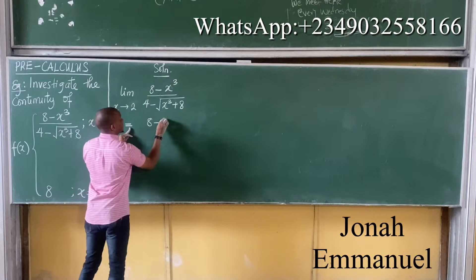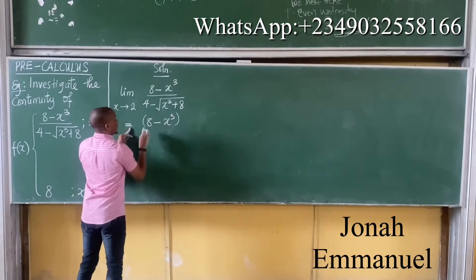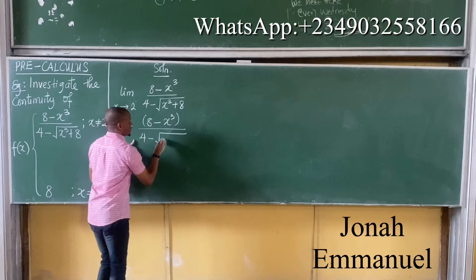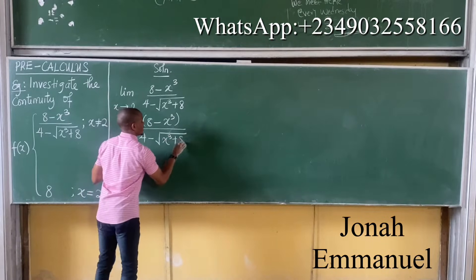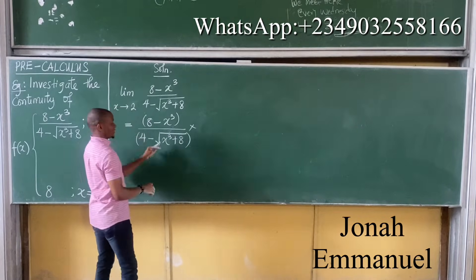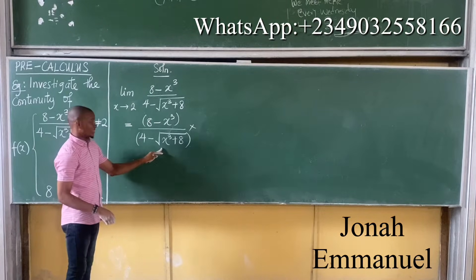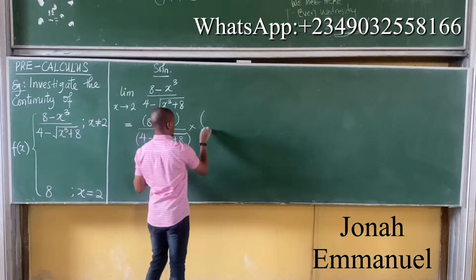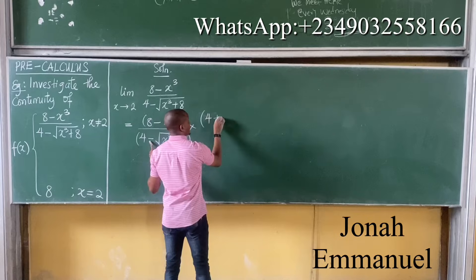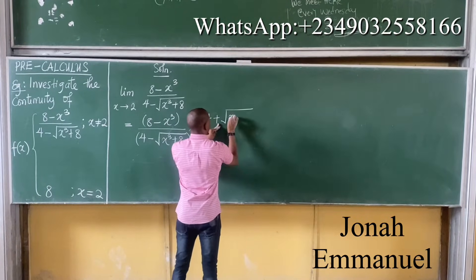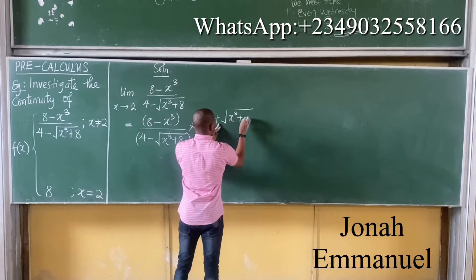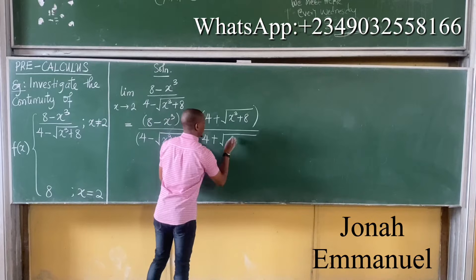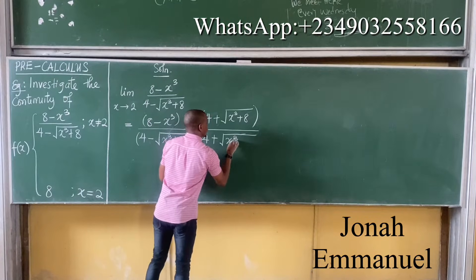So this would now be equal to, I'm having 8 minus x cubed, all over, I'm having 4 minus square root of x cubed plus 8, multiply this by its conjugate. And we said to find the conjugate, simply change to the opposite sign. So this now becomes 4 positive square root of x cubed plus 8, all over 4 plus square root of x cubed plus 8.